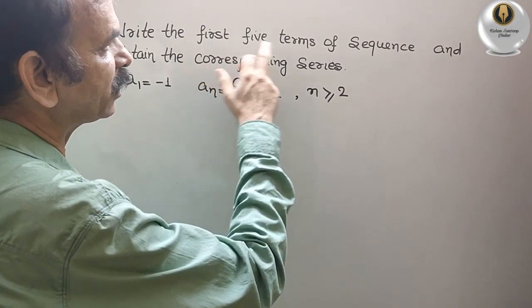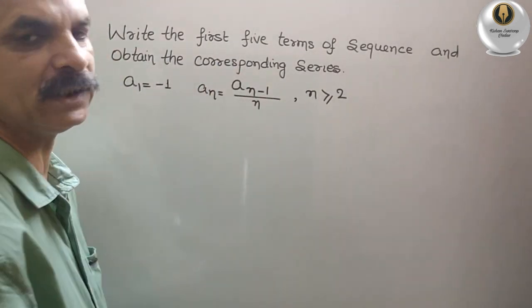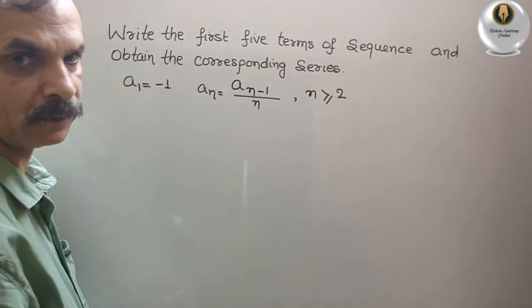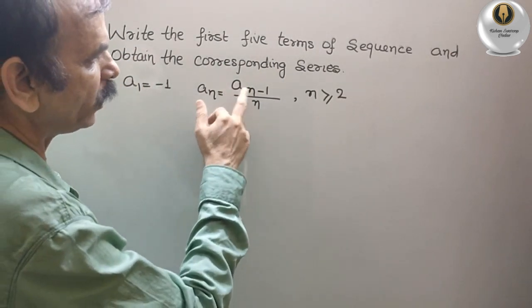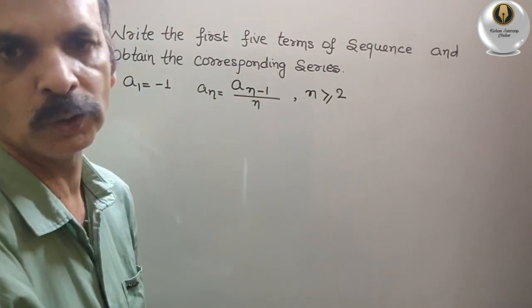Your question is, write the first 5 terms of the sequence and obtain the corresponding series. What they will be? A1 is equal to minus 1. An is equal to an minus 1 by n, n is greater than or equal to 2.